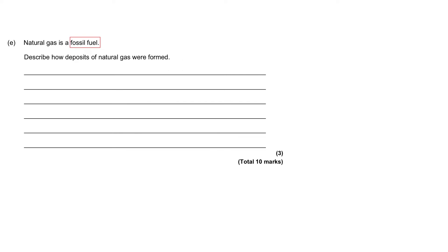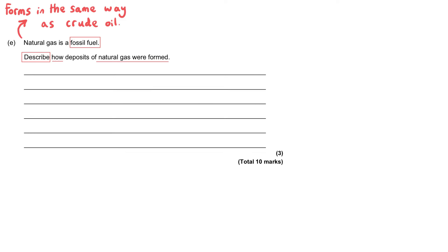Natural gas is a fossil fuel. This question asks how deposits of natural gas were formed. It's a bit sneaky because you're expected to know how oil and coal form, but it never explicitly says how natural gas forms. However, it is a reasonable question because natural gas forms in the exact same way and in the exact same place as crude oil.